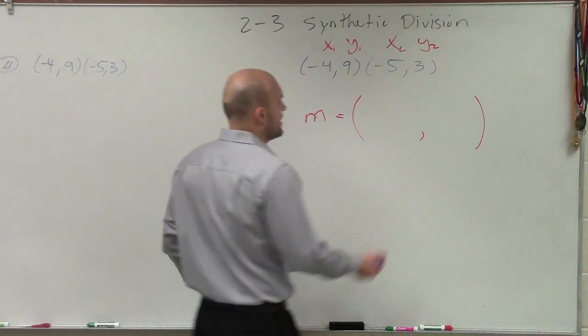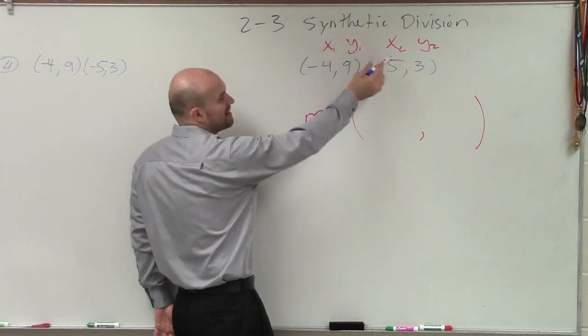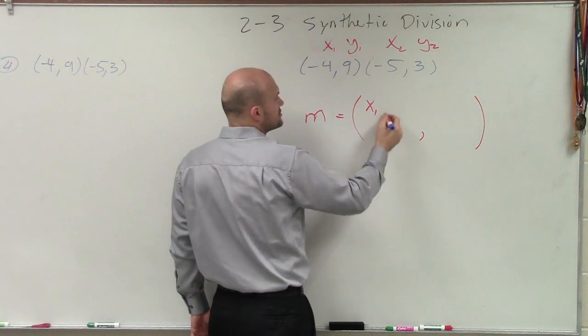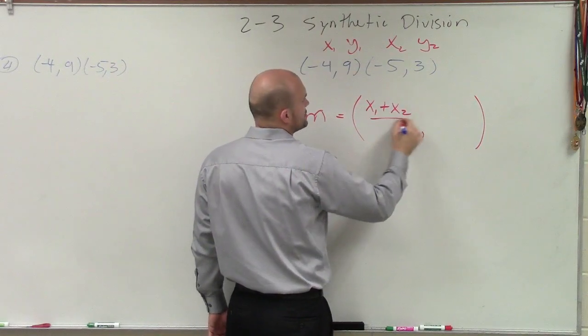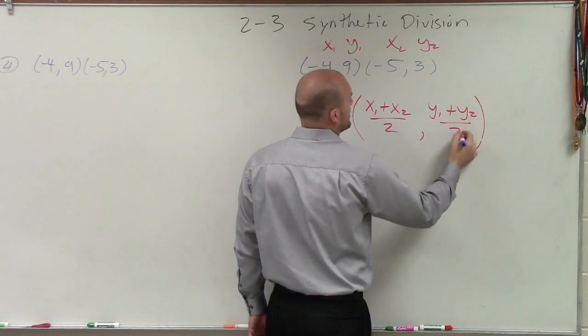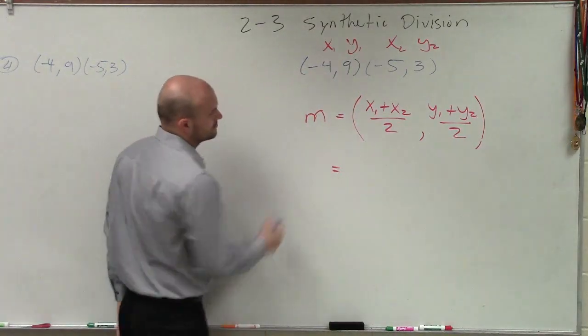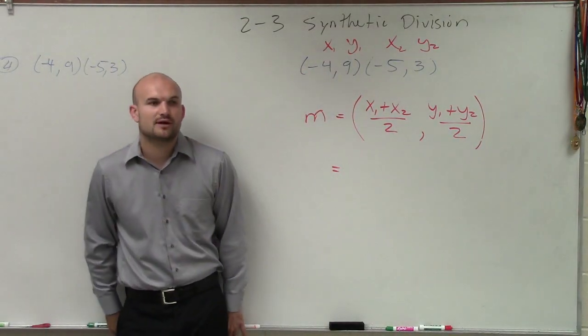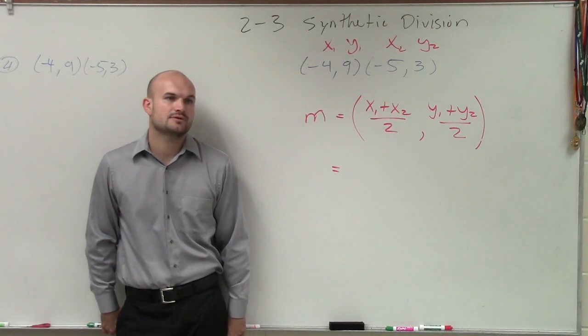So the midpoint, if I want to find the middle between my two x values, I need to find what we call our numeric average, which is x1 plus x2 divided by 2, y1 plus y2 divided by 2. OK, so that's going to be our formula that we'll use to read that.